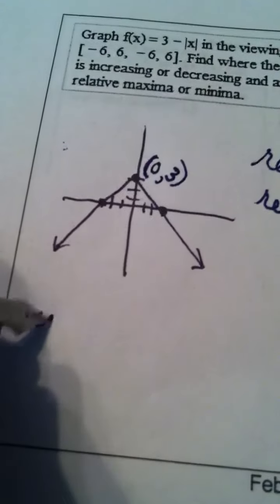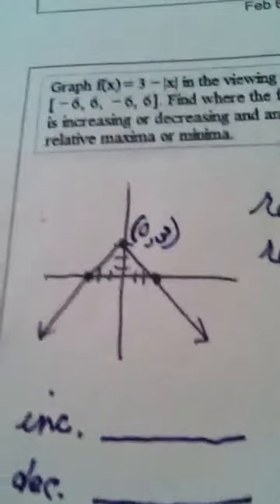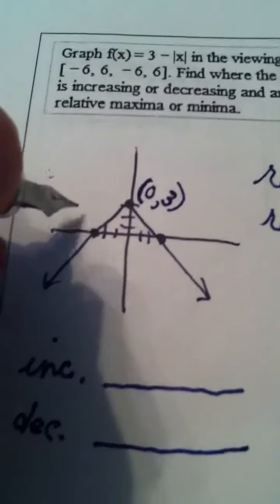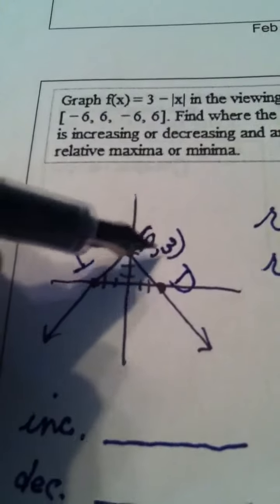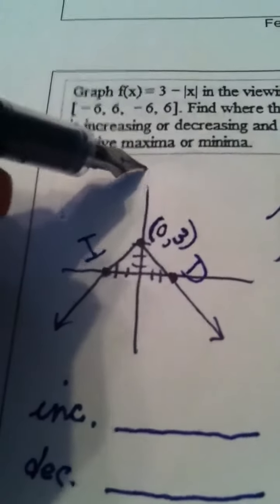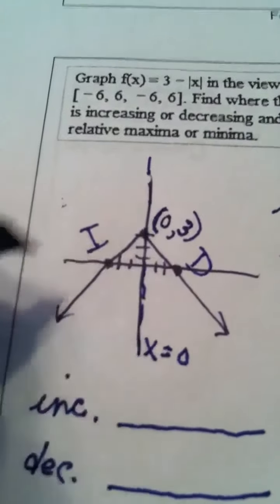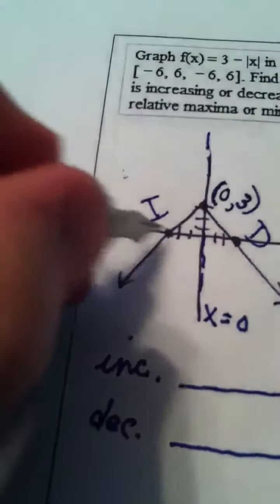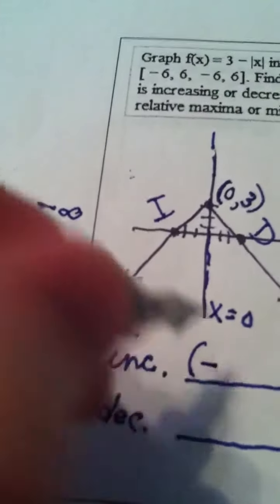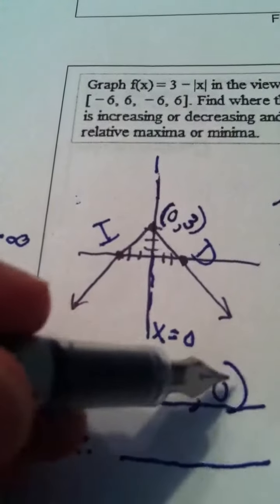Now, for increasing and decreasing, we remember that we always scan from left to right. This part of the graph is increasing, this part of the graph is decreasing. Increasing and decreasing always involve x, so this x value of 0 is where it changes from increasing to decreasing. So increasing, we're coming from negative infinity to 0. From negative infinity to 0 is where our graph is increasing, and remember no bracket, it's always open, it's a paren.